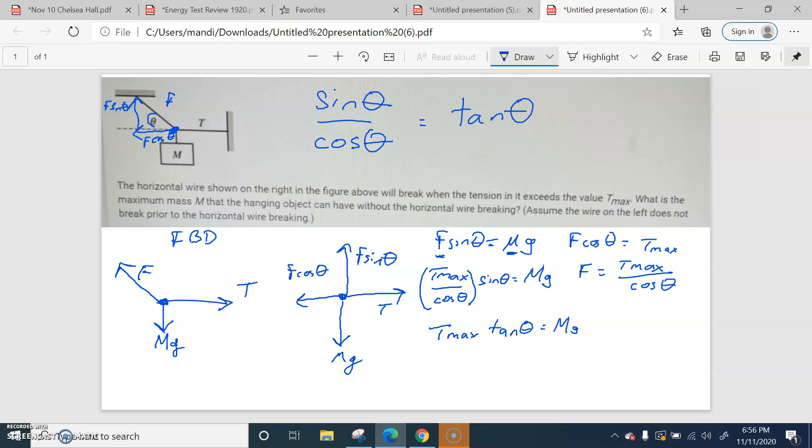And I think we need to get m by itself. So we're going to do T max times the tangent of theta divided by g. That is our mass. That's how you do that.